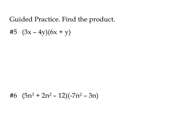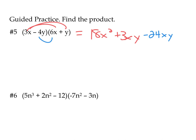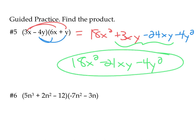Moving on to more multiplying polynomials — you should pause the video, try the problem on your own, and then play it back to see how you did. Number 5: 3x minus 4y times 6x plus y. Distributing 3x into the parentheses: 3x times 6x is 18x², and 3x times y is plus 3xy. Then distributing negative 4y: negative 4y times 6x is negative 24xy, and negative 4y times y is negative 4y². Combining like terms: 18x² minus 21xy minus 4y².